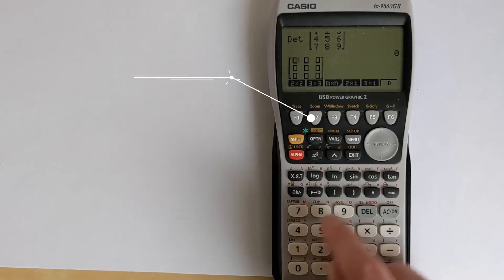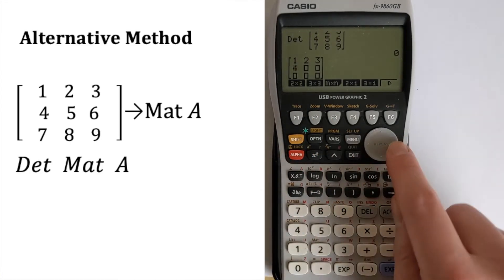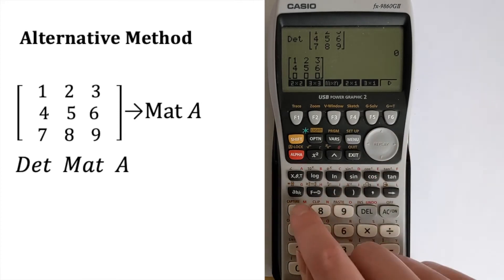Then I'm going to enter the same 3 by 3 matrix. So this is the alternative method. So we enter all of the data as before.